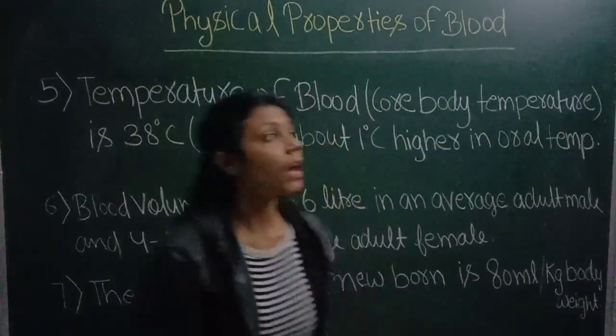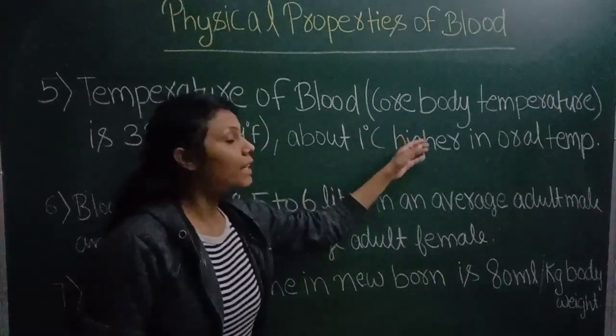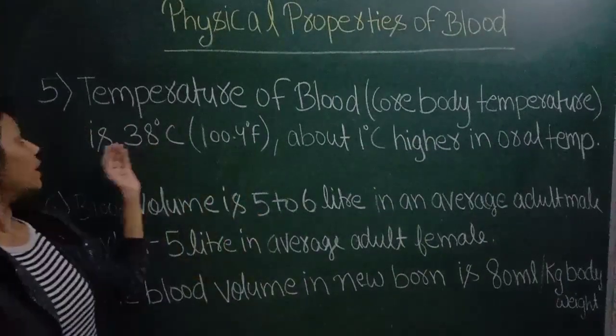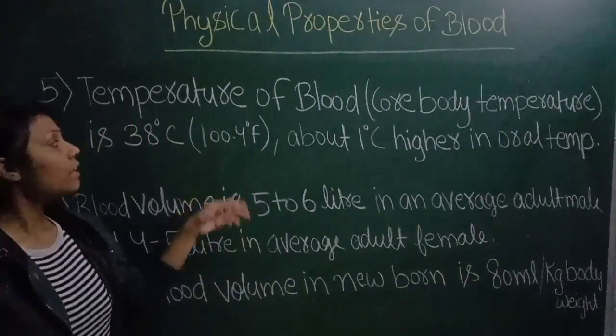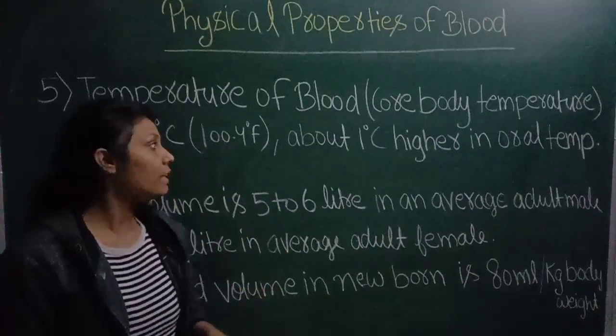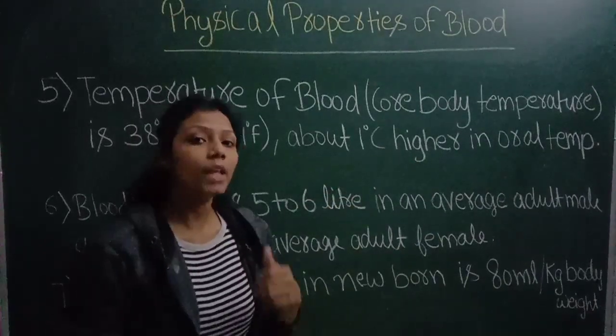The temperature of blood, that is core body temperature, is 38 degrees Celsius and 100.4 degrees Fahrenheit, about 1 degree higher than oral temperature.